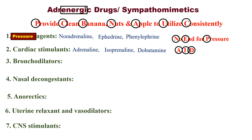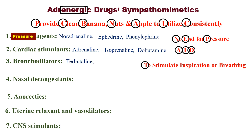Number three: Bronchodilators — these are the agents which dilate the bronchi, a part of the respiratory tract. Once the bronchi are dilated, respiration increases. Bronchodilators are used to stimulate inspiration and breathing. The mnemonic is 'TSIB': T for Terbutaline, S for Salbutamol, I for Isoprenaline, and B for Bambuterol.